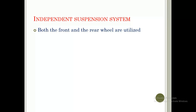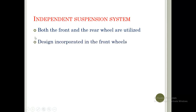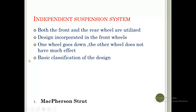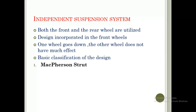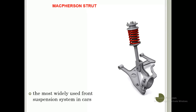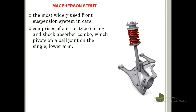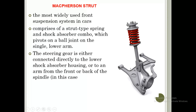The independent suspension system utilizes both front and rear wheels. In this design, if one wheel goes down the other is not much affected. There are three types based on classification of design: the MacPherson strut, double wishbone, and multi-link. The MacPherson strut is located at the front wheels and is the most widely used front suspension system in cars. It comprises a strut-type spring and shock absorber combination which pivots on a ball joint.